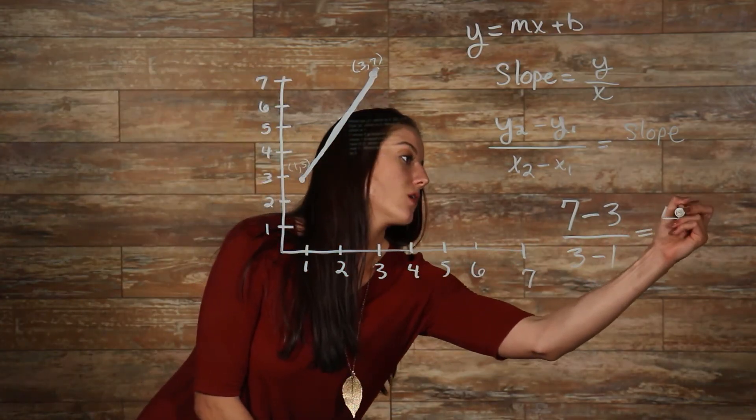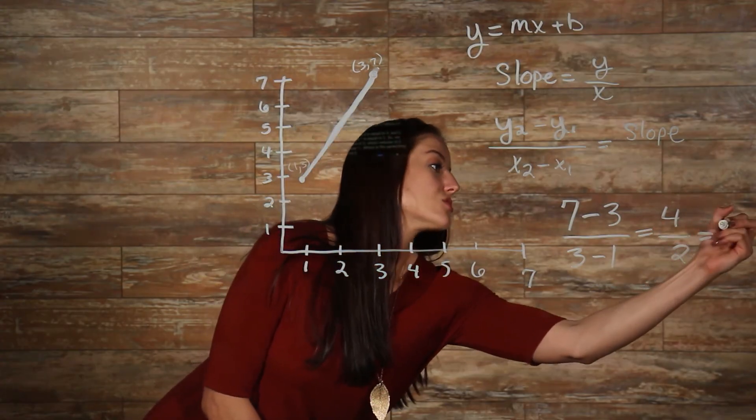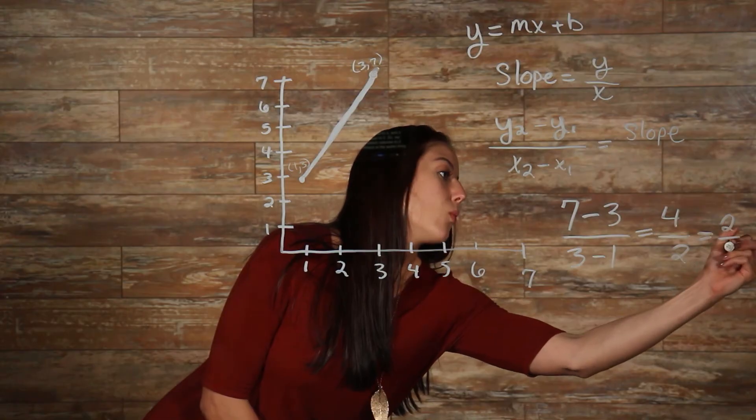So, it's going to give us 4 over 2, which reduces, simply, to 2 over 1, which is the same thing as 2.